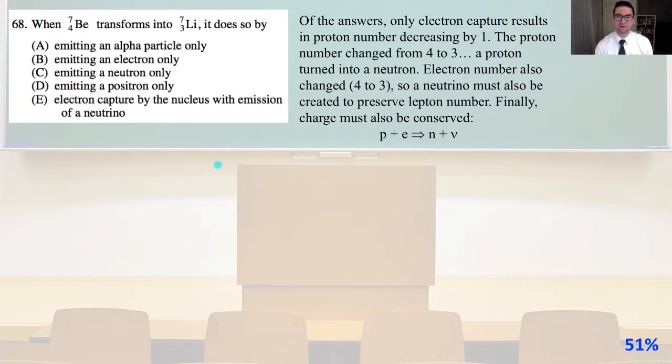So a neutrino must also be created to preserve lepton number. Finally, charge must be preserved. So there you go. There's the reaction. Proton plus electron is going to give you our neutron plus our neutrino. And that is going to be answer E.